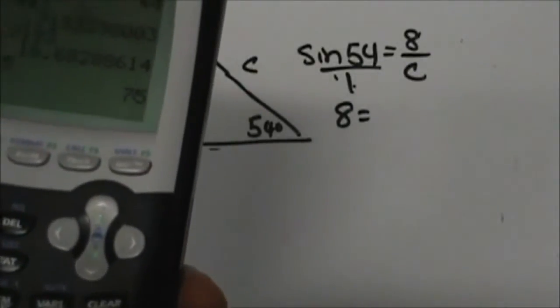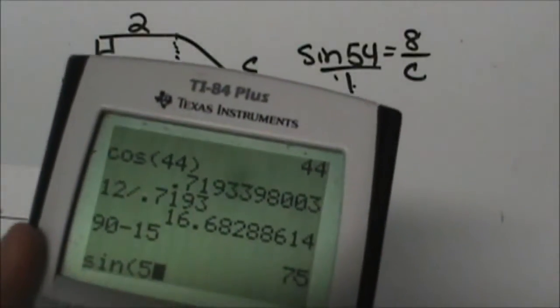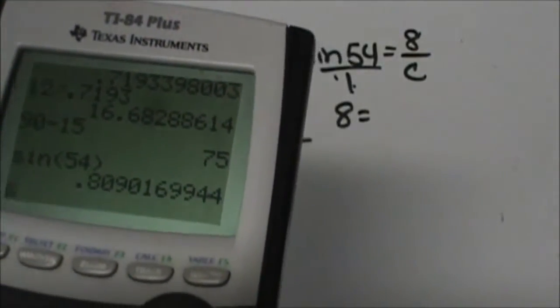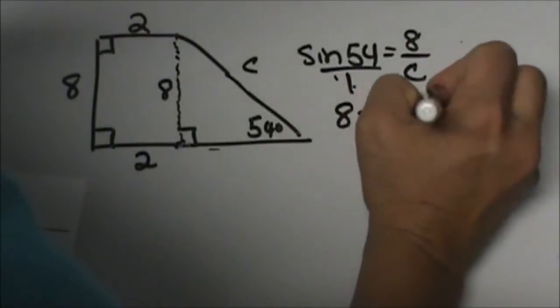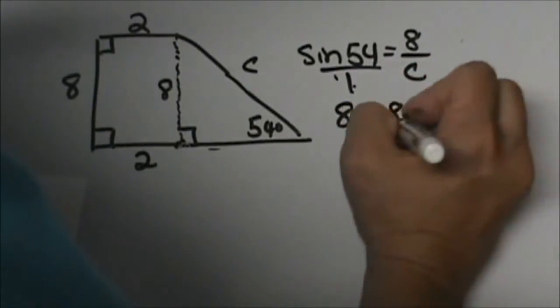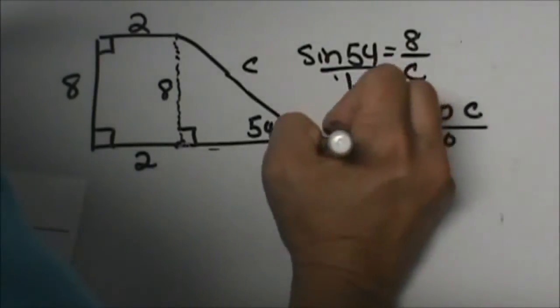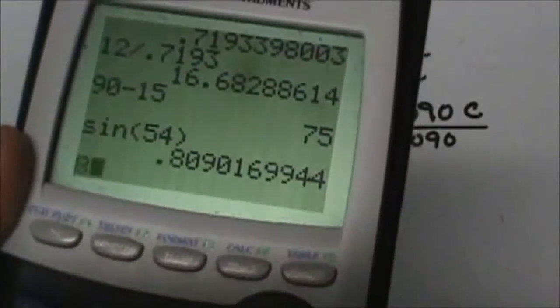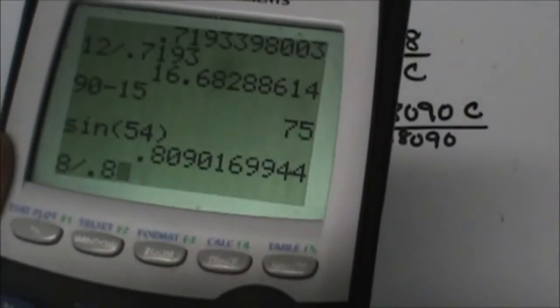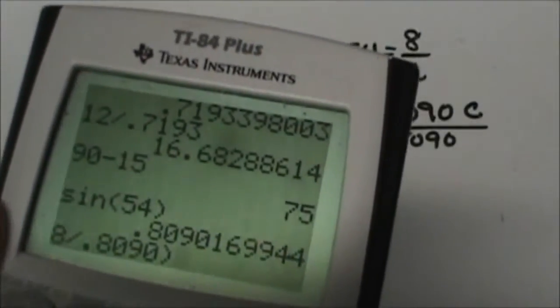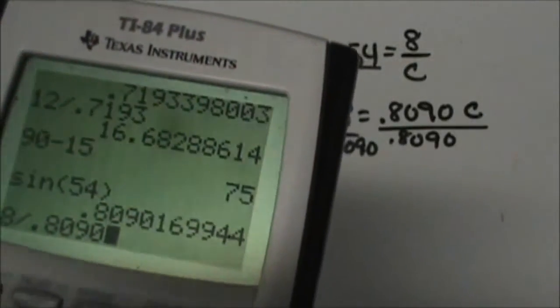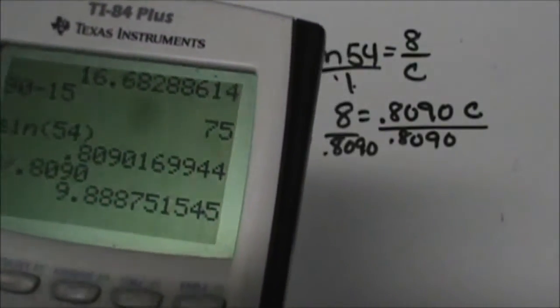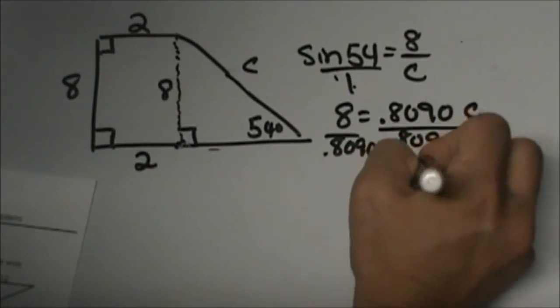Okay, grab your calculator. The sine of 54 is 0.8090, so 0.8090C. Divide both sides by 0.8090. Let's see, 8 divided by 0.8090 gives me 9.8887, so 9.9. So C is 9.9.